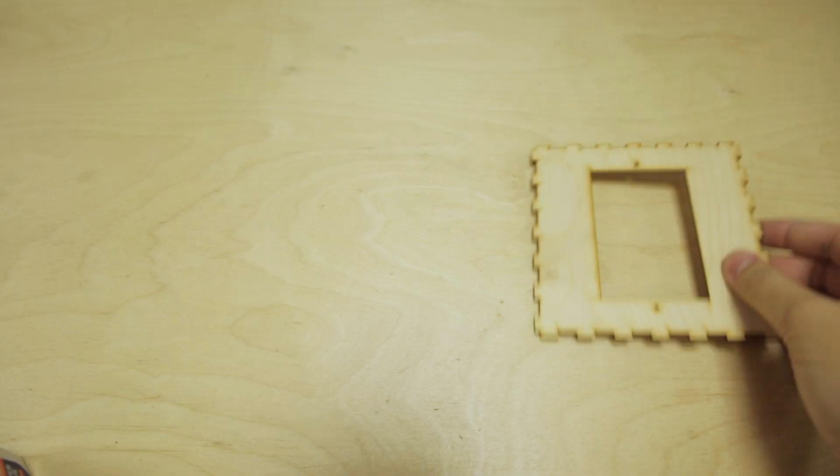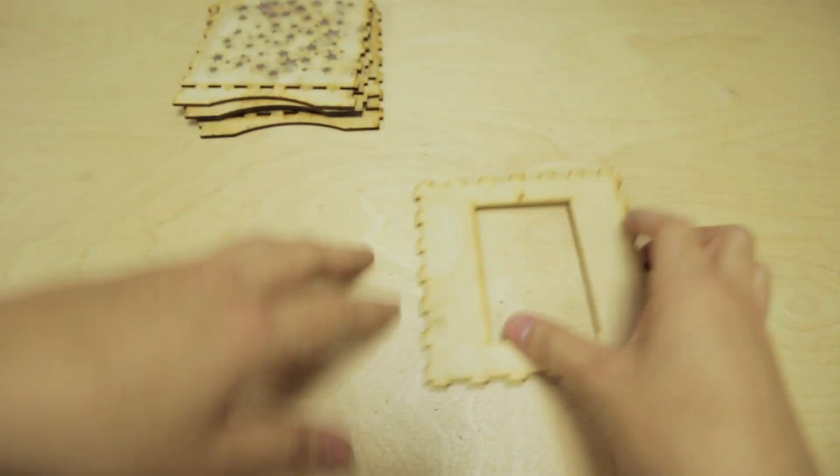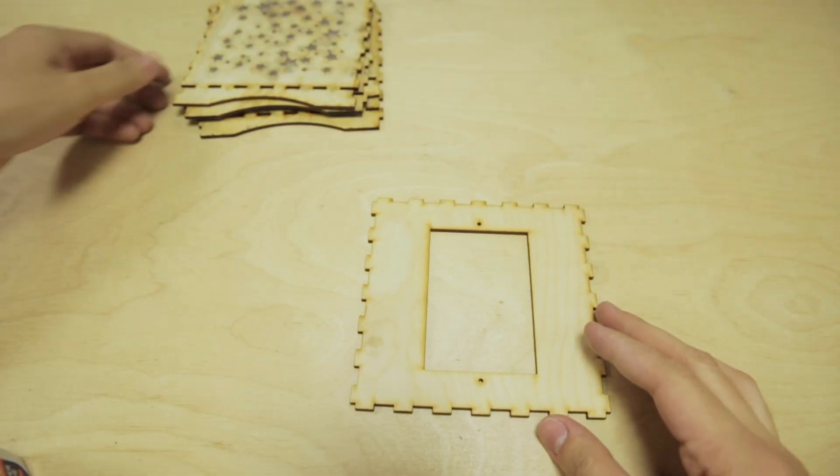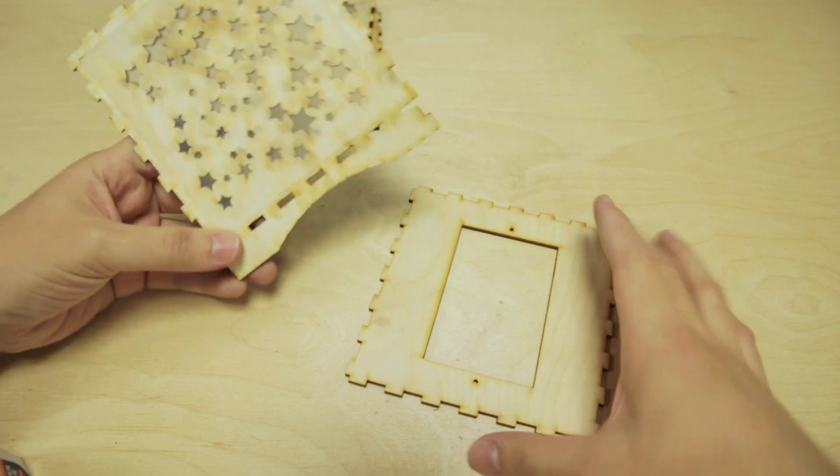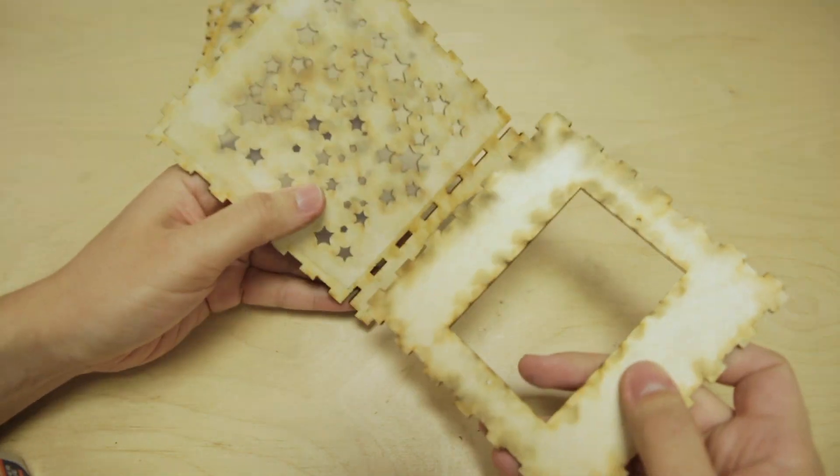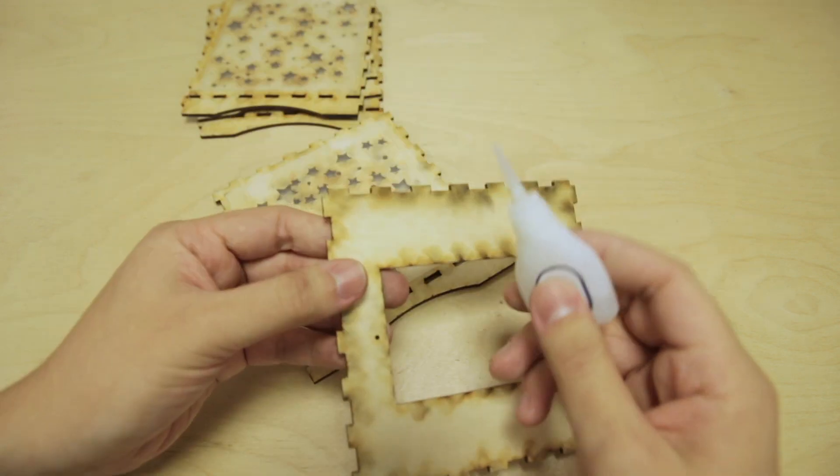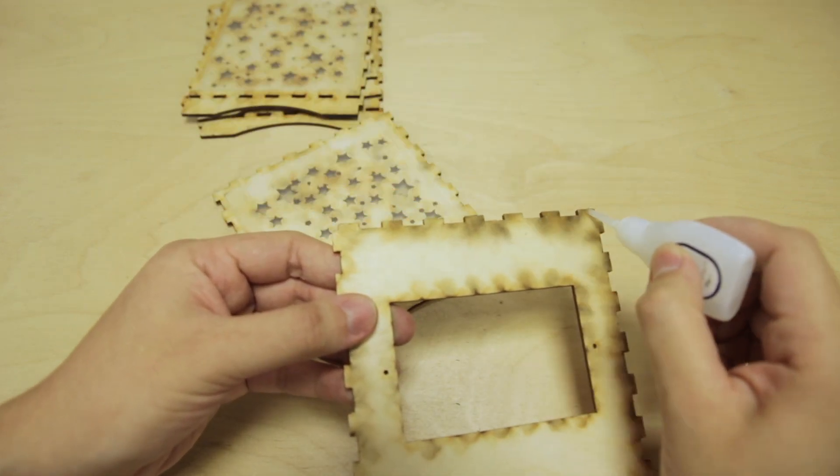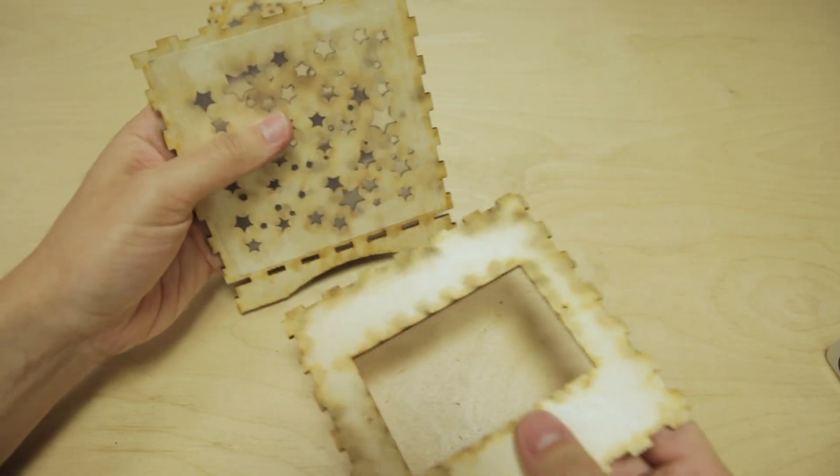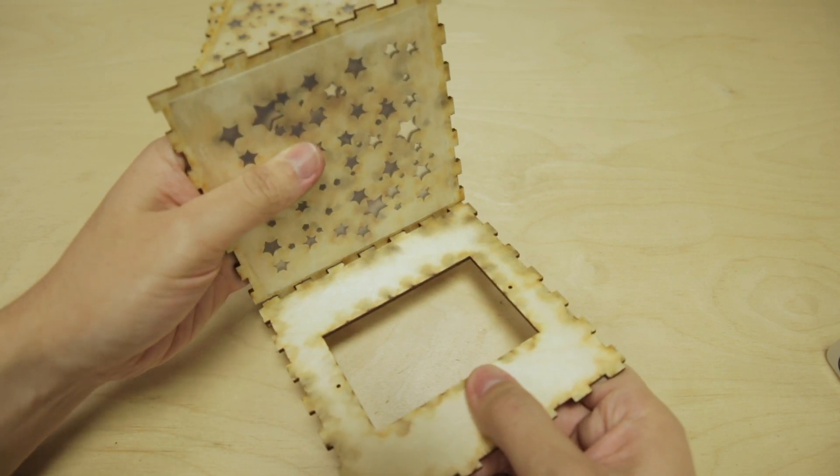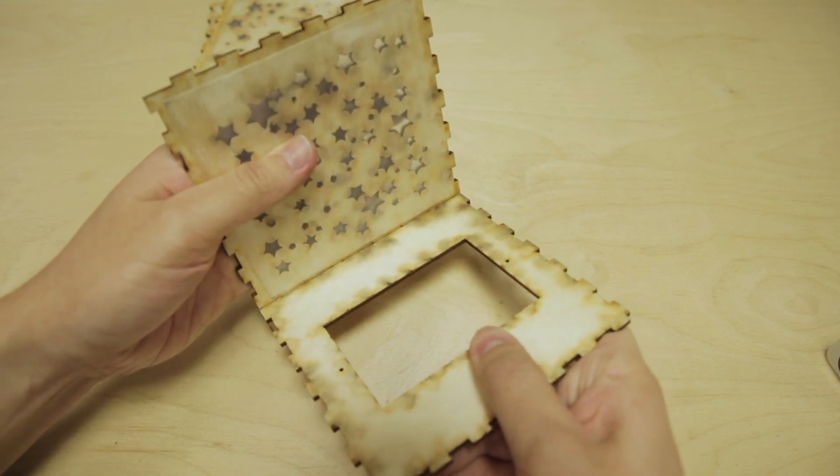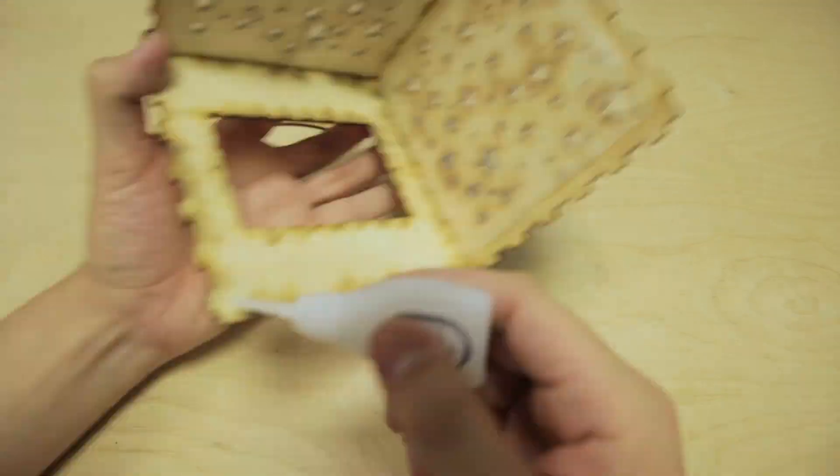Now we'll begin assembling all the panels. Start with the base. The faces are all symmetrical, so it doesn't matter which one you start with. As you can see, the finger joints here will fit into each other. Add some glue to the finger joints and then slot them together. Make sure you get a nice 90 degree angle. I'm going to do the same with all the other faces.